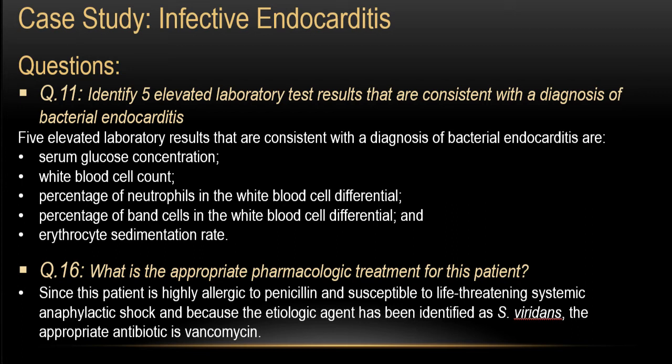What is the appropriate pharmacologic treatment for this patient? The patient gives a penicillin allergy history — specifically a life-threatening systemic anaphylactic shock. Because of this, and because the etiology has been identified as Strep viridans by blood culture, the appropriate antibiotic therapy is going to be vancomycin.